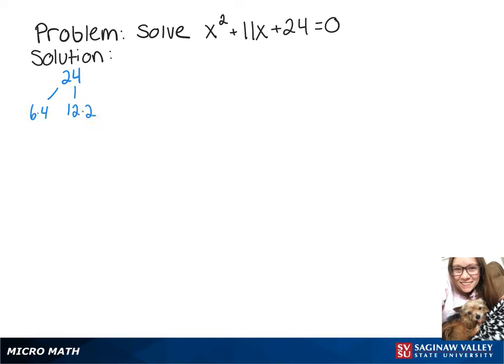So I can think of 6 times 4, 12 times 2, or 8 times 3. When we add those together, we get 10, 14, and 11.